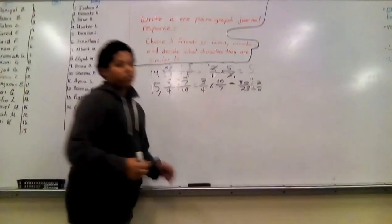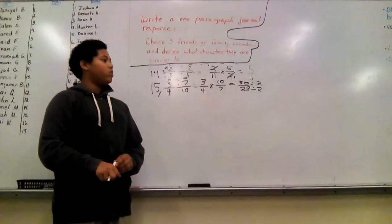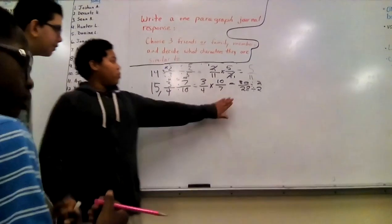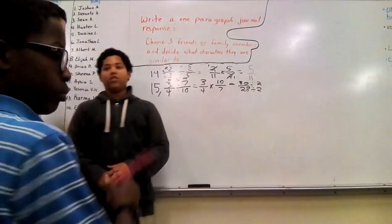4. Wait. They're both even numbers. What are even numbers divisible by? 2. So we divide by 2. Okay?